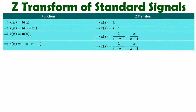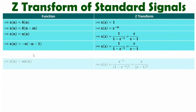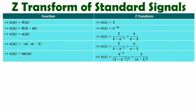Now I'll discuss the Z-transform of N·U(n). That will be Z⁻¹ divided by (1 minus Z⁻¹) squared. And if you substitute Z⁻¹ equals 1/Z, then it becomes Z divided by (Z minus 1) squared. Just note this down, as we will be using it in future videos.